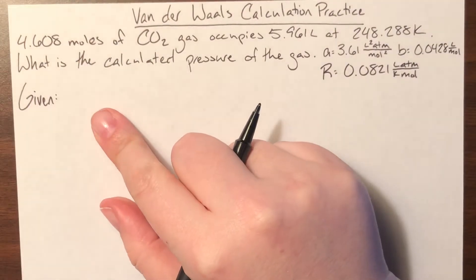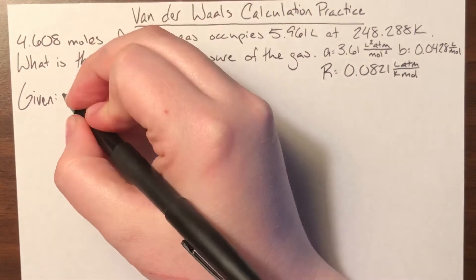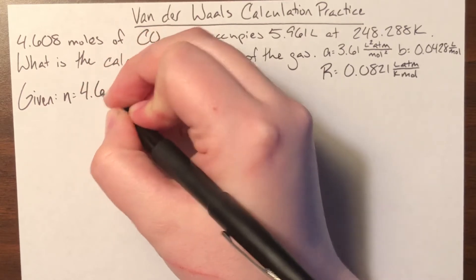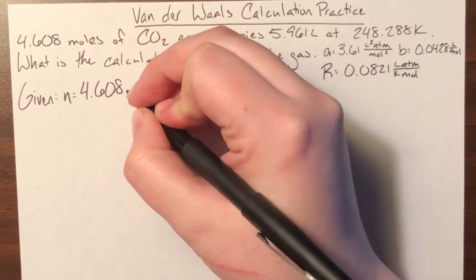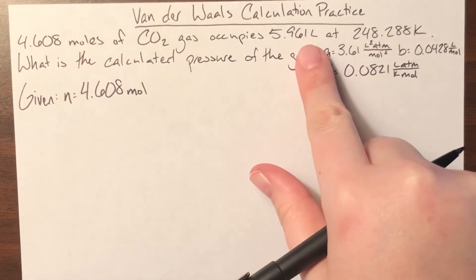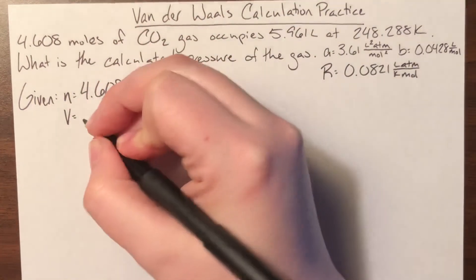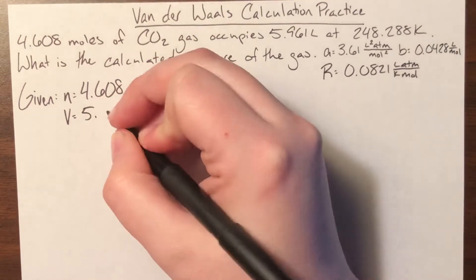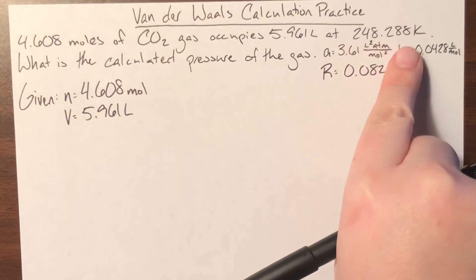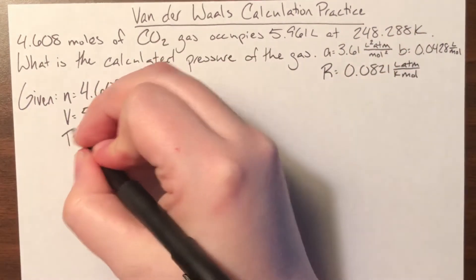The question states that 4.608 moles — moles is a unit of N, so my N value is 4.608 — of carbon dioxide gas occupied 5.961 liters. Liters is a unit of volume, so I'll establish that as my volume. At 288 Kelvin, so that is my temperature.